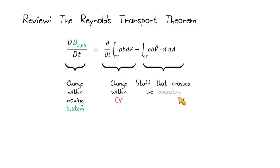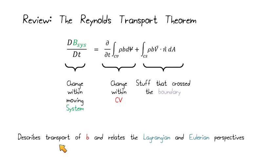And then we have the things that cross the boundary, remembering that we're describing the transport of this property, B.